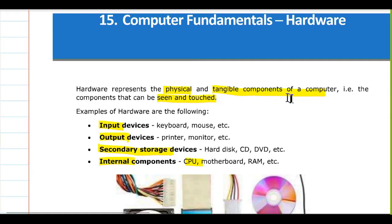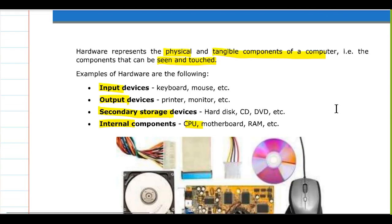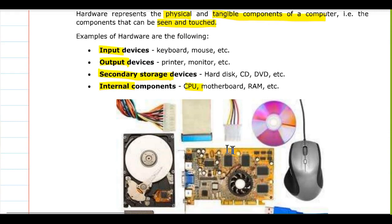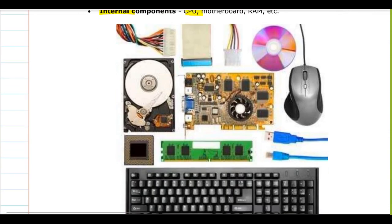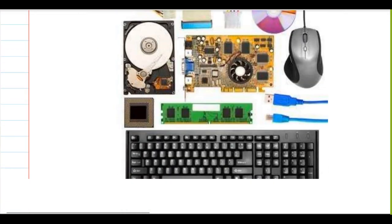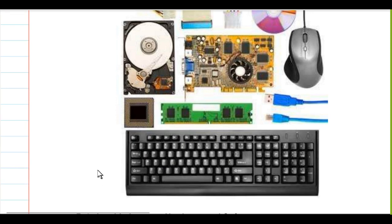Hardware refers to the core and tangible components of a computer — components that can be seen and touched. Anything that you can touch or see in a computer is called hardware. This here is a RAM, and this one is the keyboard of a computer.